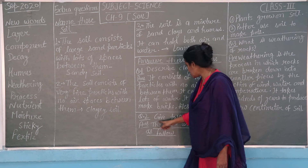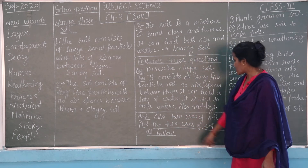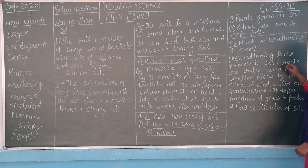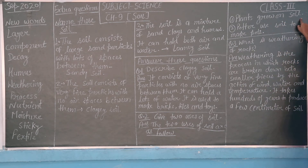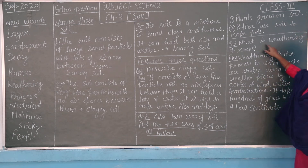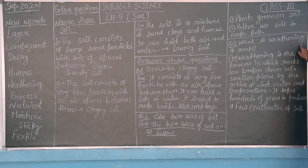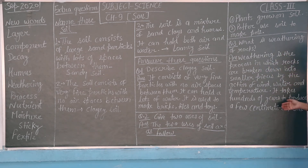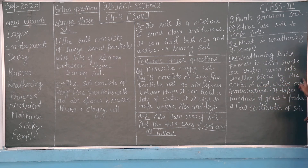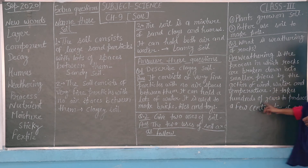Question number three: what is weathering from rocks? It is the process in which rocks are broken down into smaller pieces by the action of wind, water and temperature. It takes hundreds of years to produce a few centimeters of soil.